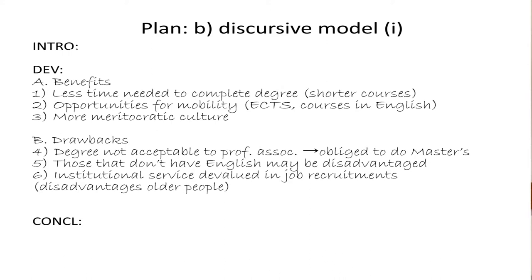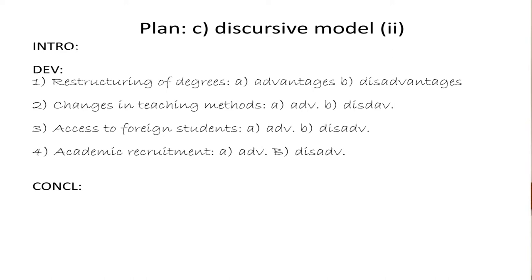If we chose to use the discursive model instead, one possible approach might be to assess the benefits and the drawbacks of the new system in turn. In this plan the benefits have been listed first followed by the drawbacks, but we could just as easily choose to deal with each topic in turn and discuss the advantages and disadvantages of each. These are not the only ways in which this material could be approached — it could also be presented using the comparison/contrast model, perhaps comparing the situation today with how it was 15 years ago. Or we could possibly use a process or sequence model, though in that case we'd have to have a very clear idea about the order in which each change was implemented.